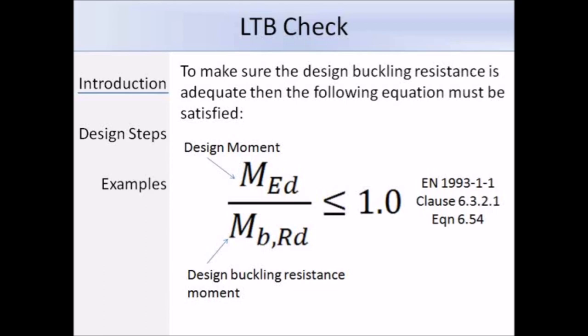This is the equation that needs to be satisfied to show that the LTB resistance is acceptable, and it's equation 6.54 from clause 6.3.2.1. Basically what this expression is telling us is that the design moment M_Ed should be less than the value of the design buckling resistance moment M_b,Rd. In the eurocodes you will notice the subscripts are often related to the definition of the terms. So for the design buckling resistance, M tells you that it's the moment, b tells you that it's related to buckling, and Rd tells you that it's the design resistance.